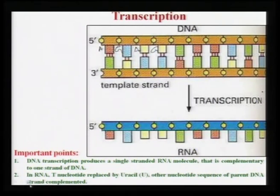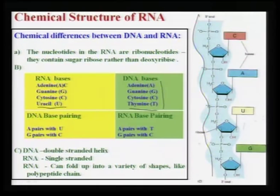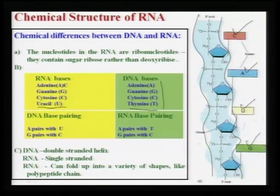In DNA you have A, T, G, C, but in RNA the thymine (T) is replaced by uracil (U), and RNA is typically a single strand — not a double strand like DNA. The four RNA bases are cytosine, adenine, uracil, and guanine. The three important chemical differences between DNA and RNA are: RNA contains ribose sugar instead of deoxyribose; uracil replaces thymine; and DNA is double-stranded while RNA is single-stranded.